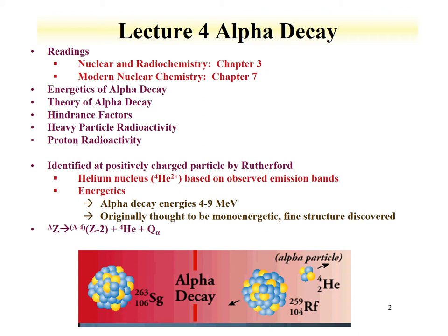We'll introduce the concept that some isotopes have a very small branching of a decay of something like carbon-12. And then we'll talk about proton radioactivity — in other words, proton decay.